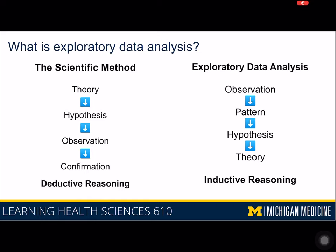There are two schools of thought when it comes to working with data. On one hand, there's the scientific method, where you start with a theory that grows into a hypothesis. You then go out in the world and make a series of observations, and finally you either confirm or reject your hypothesis, potentially going back to alter your original theory. That form of reasoning is called deductive reasoning.